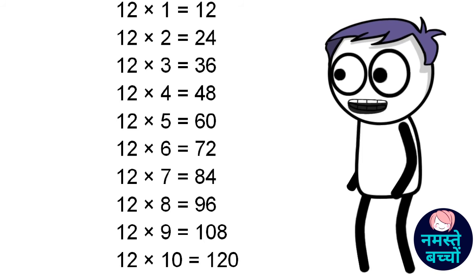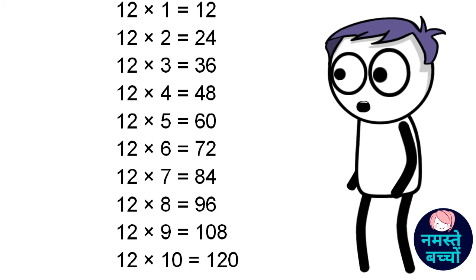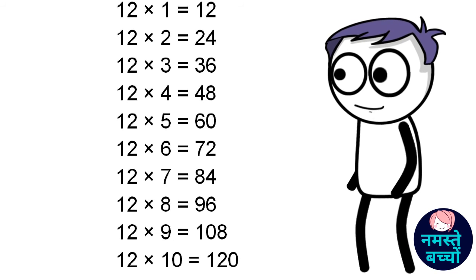Twelve eights are ninety-six. Twelve nines are one hundred eight. Twelve tens are one hundred twenty.